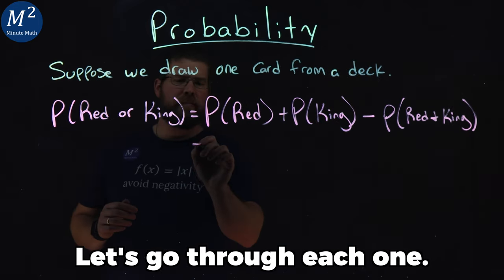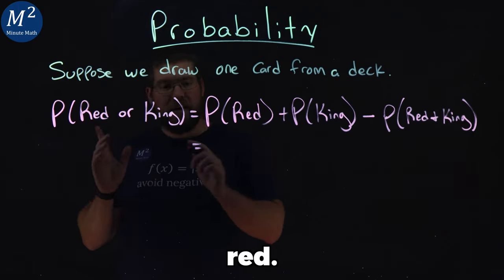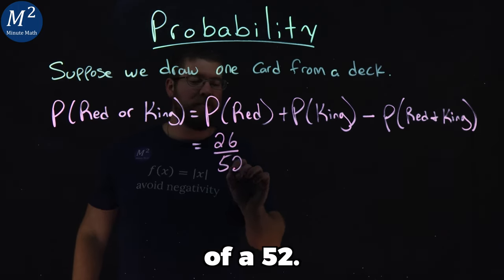Let's go through each one. The probability of a red card, well half the cards in the deck are red. That would be 26 out of 52.